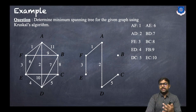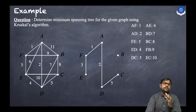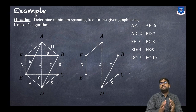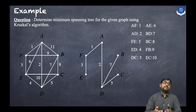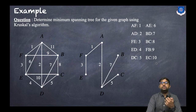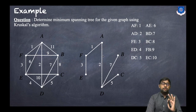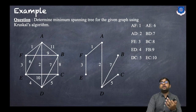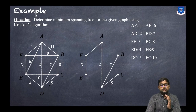Next is AE, but if we take AE it will again contain a cycle, so AE cannot be included. Then we consider BD — we can add BD. Now, as you can see, we have covered all the vertices and they are all connected, giving us the minimum spanning tree. The remaining three edges have not yet been processed.